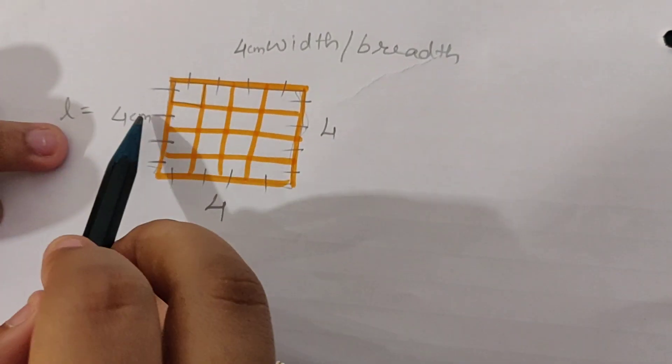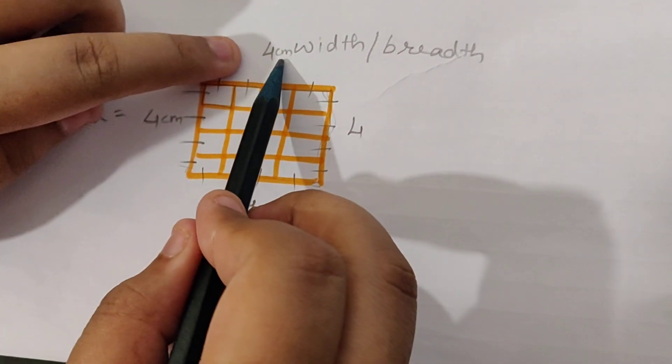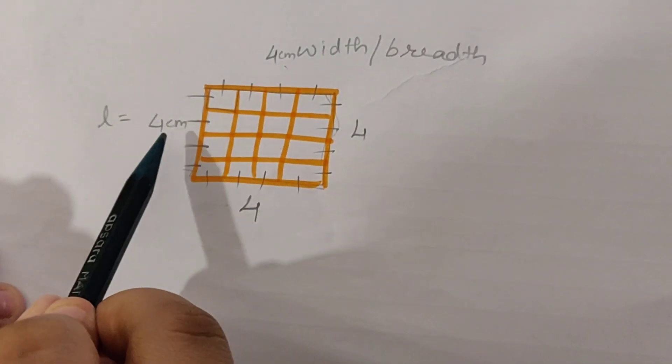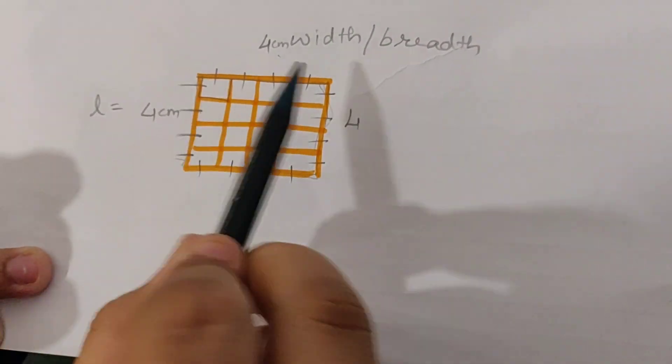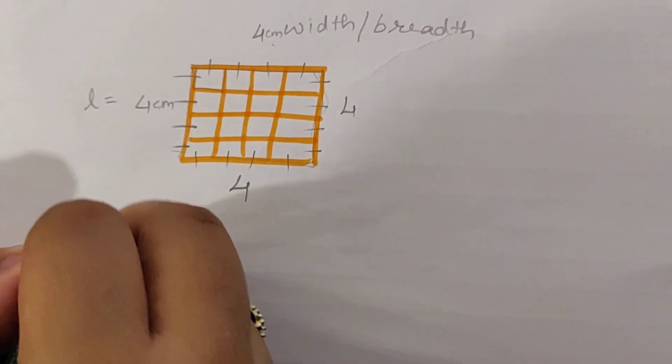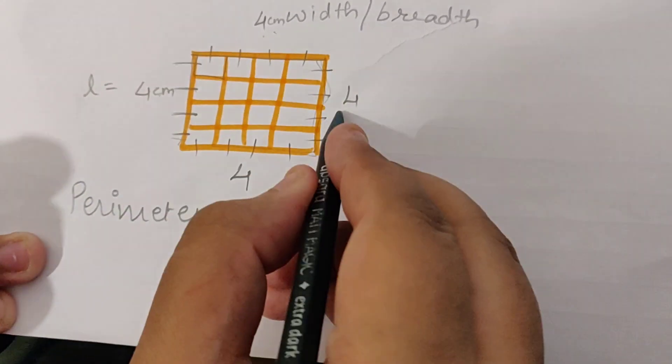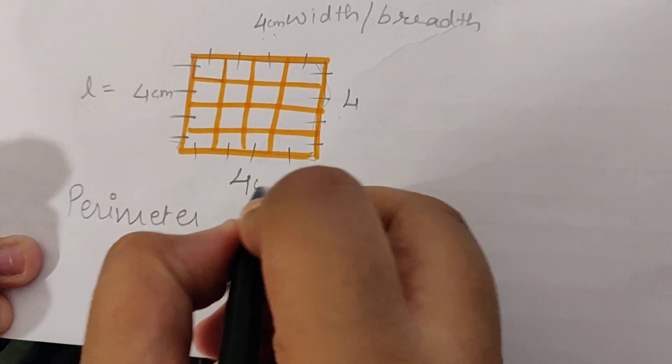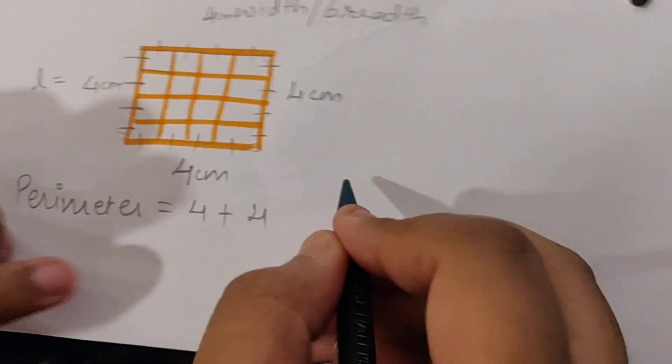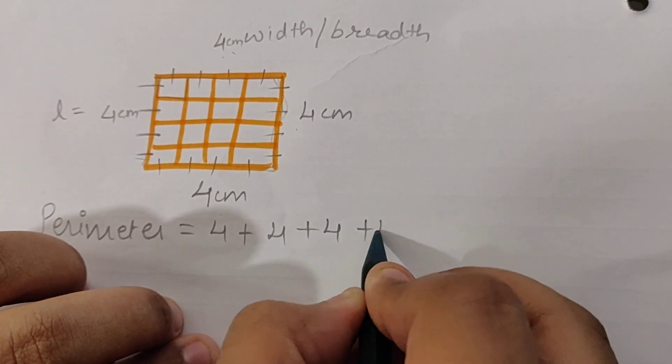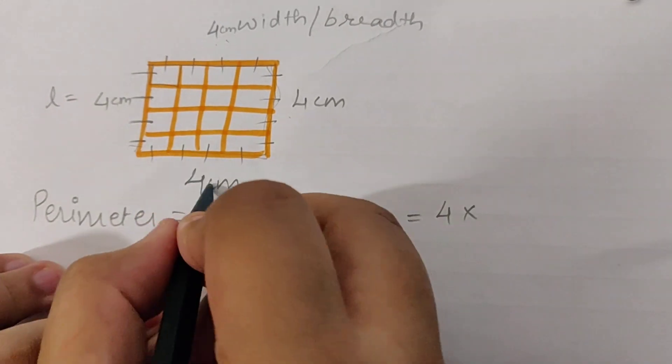If you see, in area we had only taken one length and one breadth. But in perimeter we have to find the distance all around. That means perimeter would be nothing but addition of all the sides - that is 4 plus 4 plus 4 and plus 4.